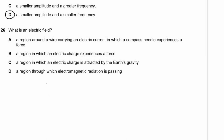Question 26. What is an electric field? Option A describes a magnetic field around a wire — not an electric field. Option B: a region in which an electric charge experiences a force — correct. Option C references gravity — no. Option D references electromagnetic radiation — no. Answer B.